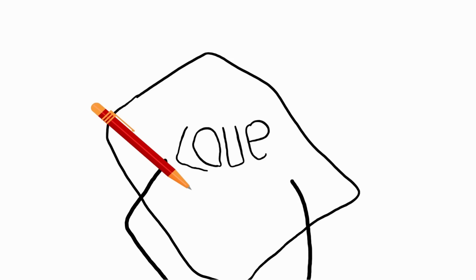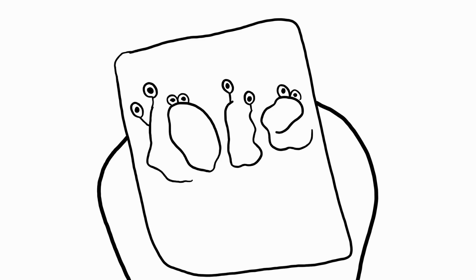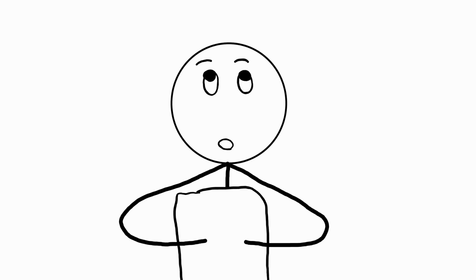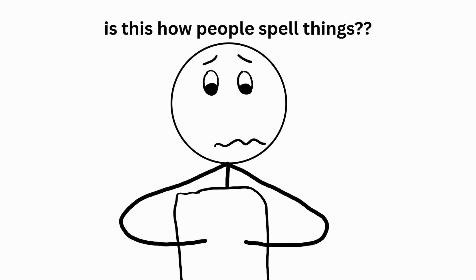Jamais-vu. You're writing the word love, and after the sixth or seventh time, it seems wrong. The letters seem strange as they stare back at you. Suddenly, you're wondering, hold on, is this how people spell things?